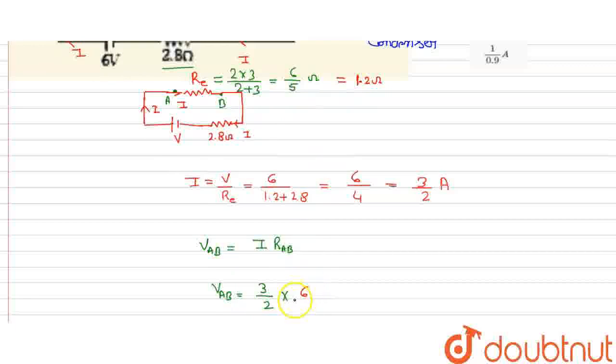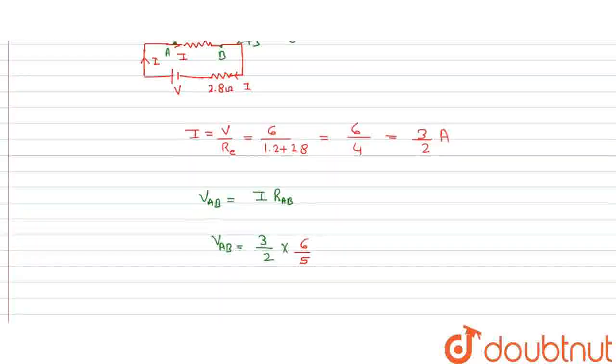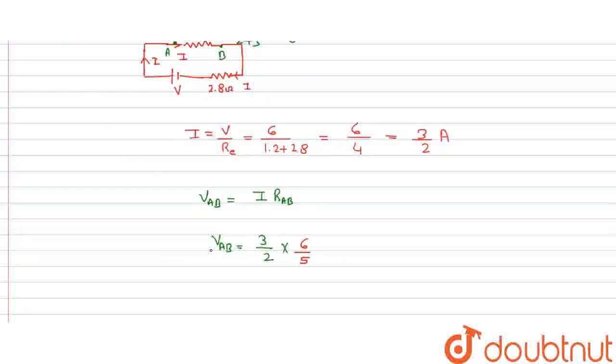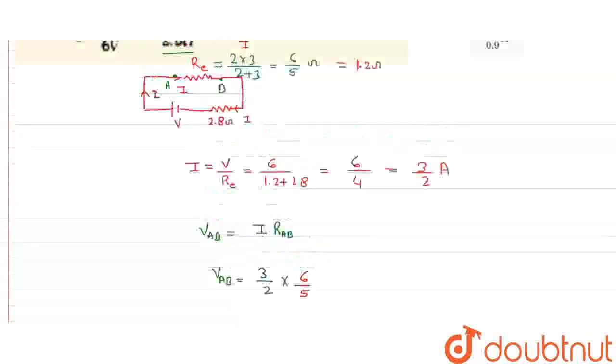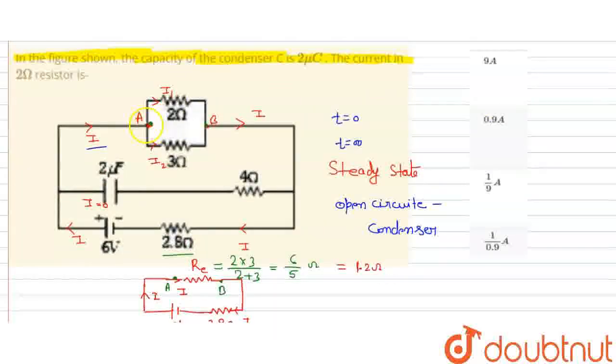So V_AB equals current 3 by 2 times resistance 6 by 5. This gives us V_AB. The potential between A and B is calculated. Now we can find the flowing current I1.